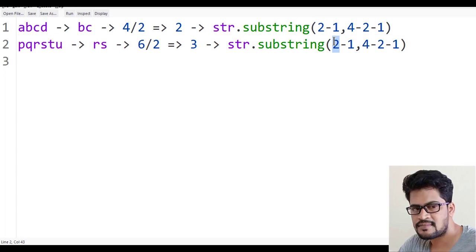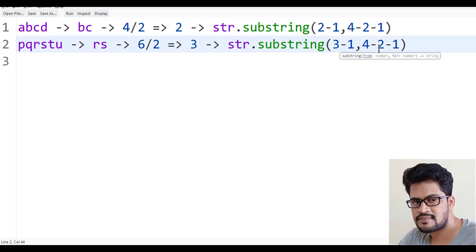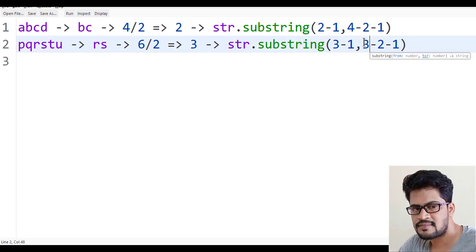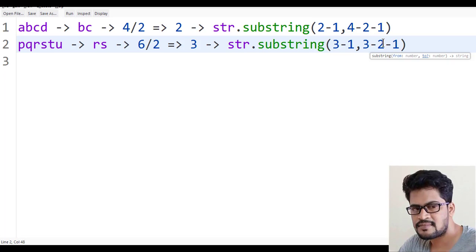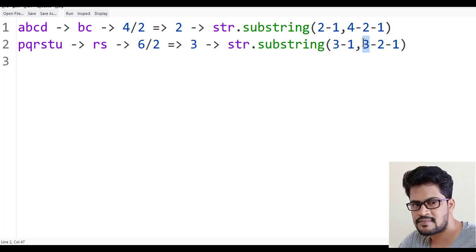Let me try the same here. It is 3 minus 1, and it is 3, sorry, it's not 3, it's the length. Complete length is 6, minus, the number is 3, minus 1.